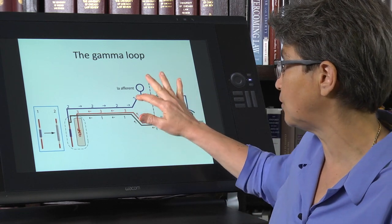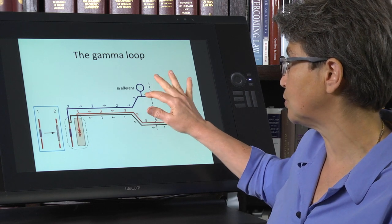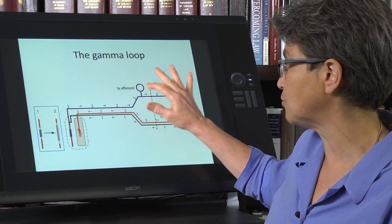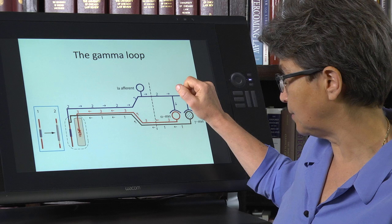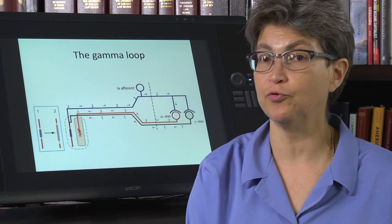They come from different roots. The ventral root contains the motor neuron axons. The dorsal root contains the sensory afferents, but then they join together to form a peripheral nerve.